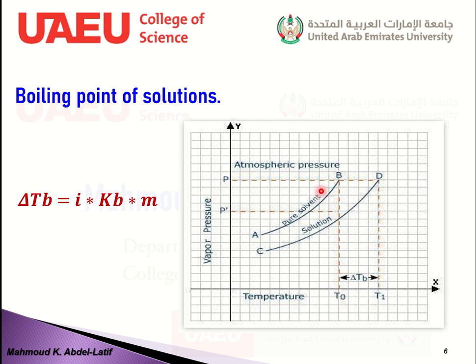To find the boiling point of a solution, extrapolate that line until it intersects the solution curve, giving T1, which is higher than the boiling point of the pure solvent. The difference between the boiling point of the pure solvent and the solution is given by delta Tb, which is directly proportional to the molality, so delta Tb equals Kb times m, where Kb is the boiling point elevation constant.